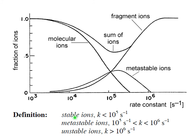Those that are between 10^5 and 10^6 are metastable ions. They start coming into the instrument and they dissociate inside the instrument, not reaching the detector.